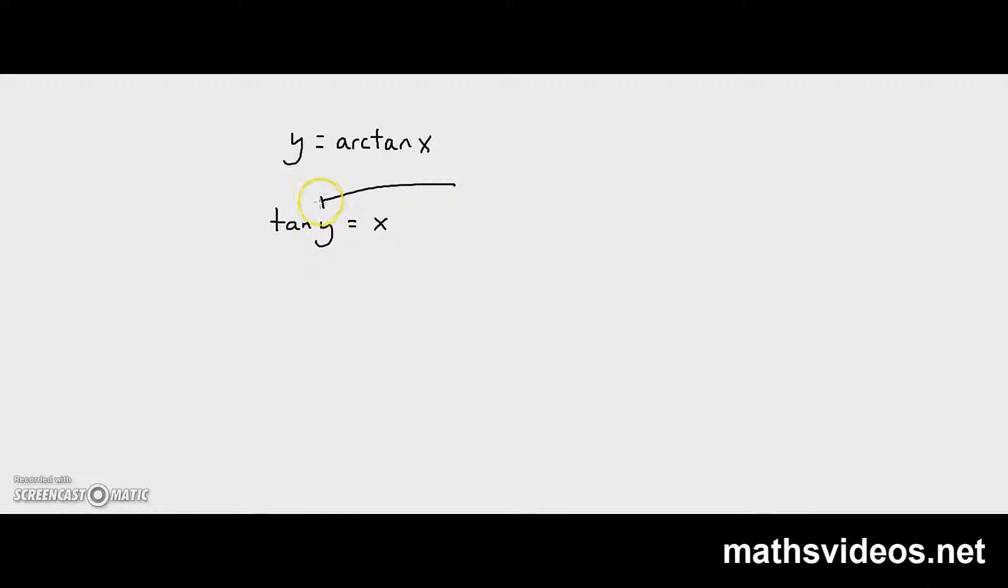Now over here, we are going to use implicit differentiation and we know that dy over dy times dy over dx is actually equal to dy over dx.